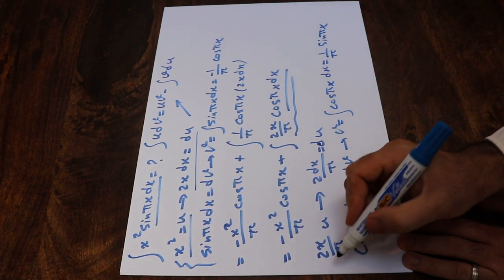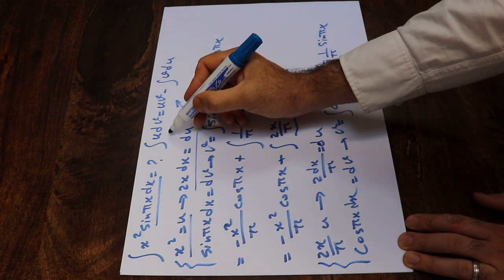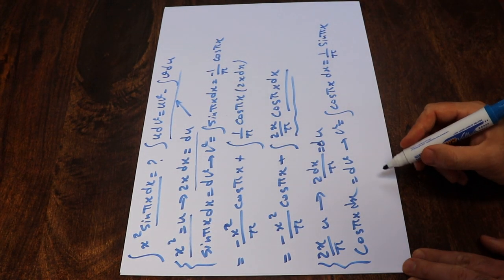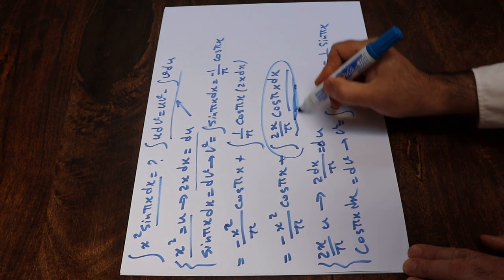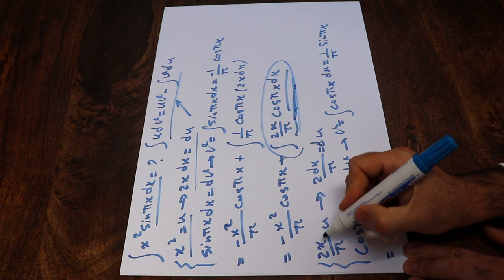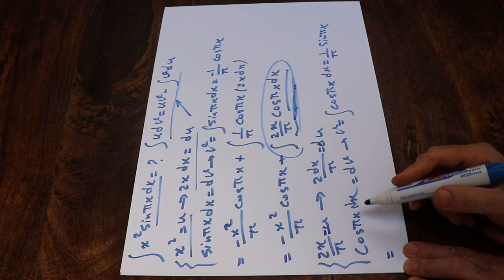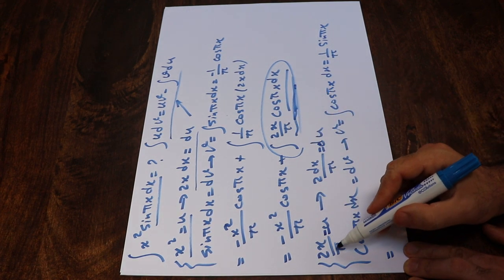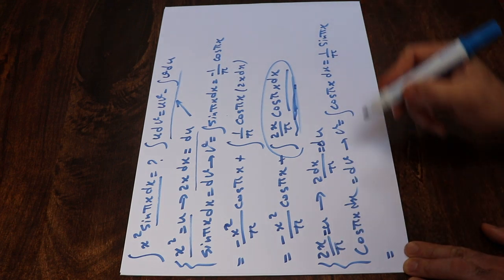So here what you need to do is substitute these terms into the equation for integration by parts. Therefore, this integral will be equal to u times v. Since 2x divided by π was equal to u, that will be equal to u times v — that is 2x divided by π times this term, which gives 2x divided by π² times sine(πx).